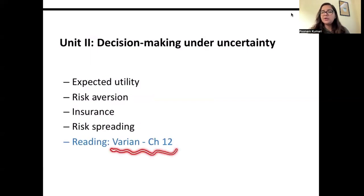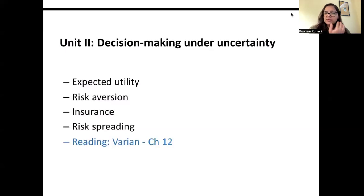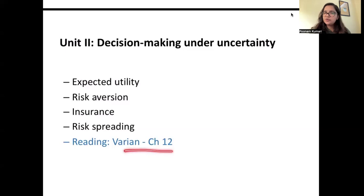Earlier a different book — Bernheim BW — was referred for this part, but now Varian chapter 12 will be used. So the first two units are from Varian: chapters 2 to 6, then 8 and 9 for unit one, and chapter 12 for unit two.